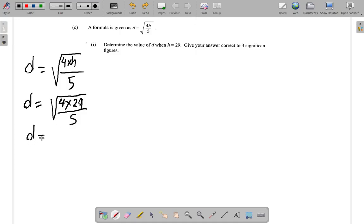D equals, you have 4 by 29, and that comes out to 116.